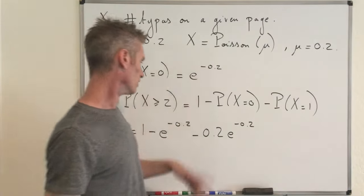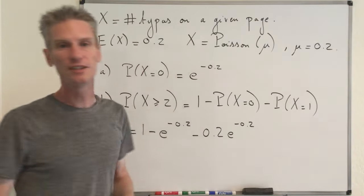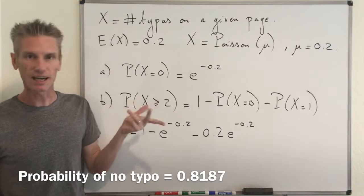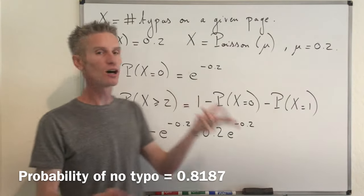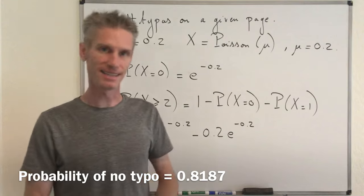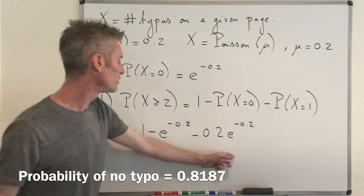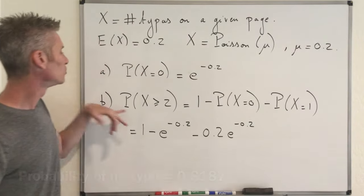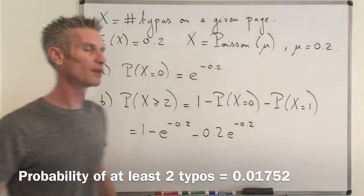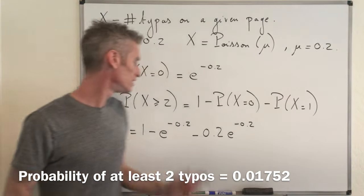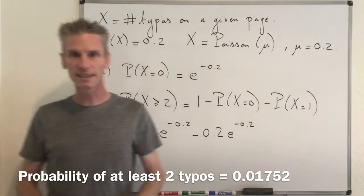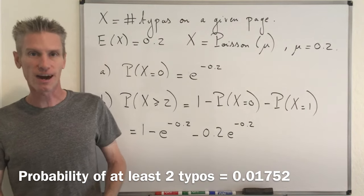Using a calculator to compute these: the probability of zero typos is approximately 0.8187, and the probability of at least two typos is approximately 0.01752.